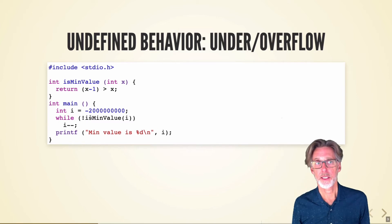So this program is intended to find the minimum integer starting at about negative two billion because we know it's somewhere down there, and while we have not found the min value, we just subtract one from i until we're done.